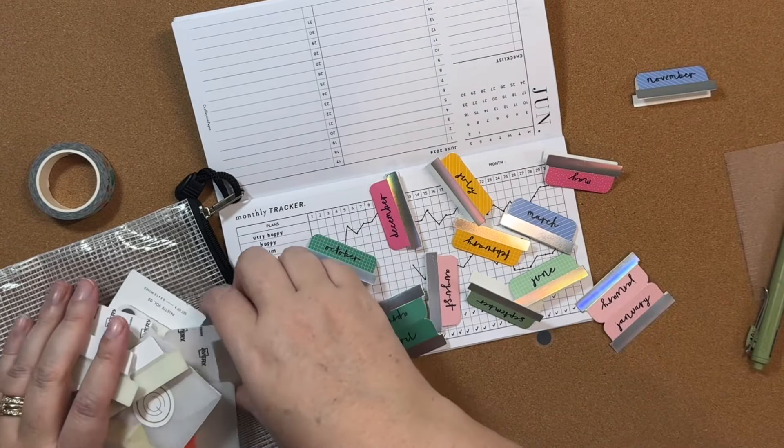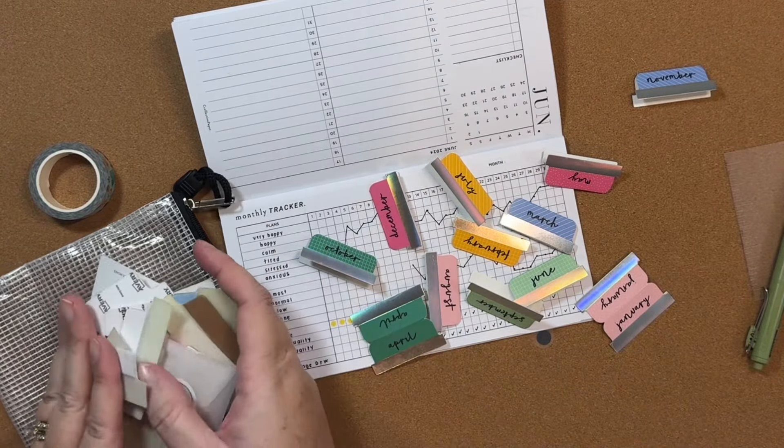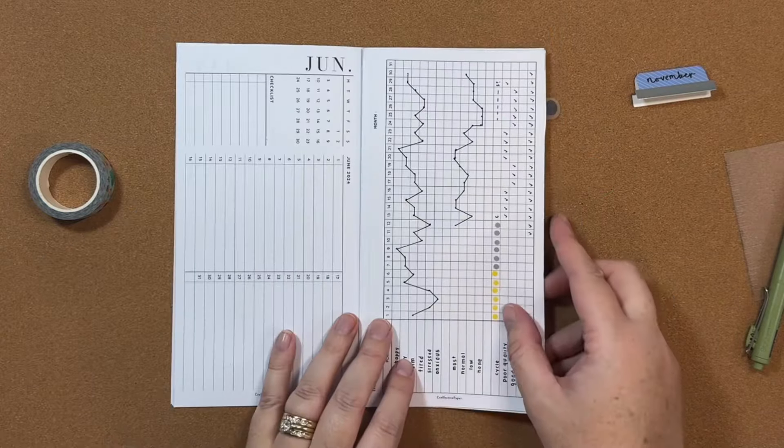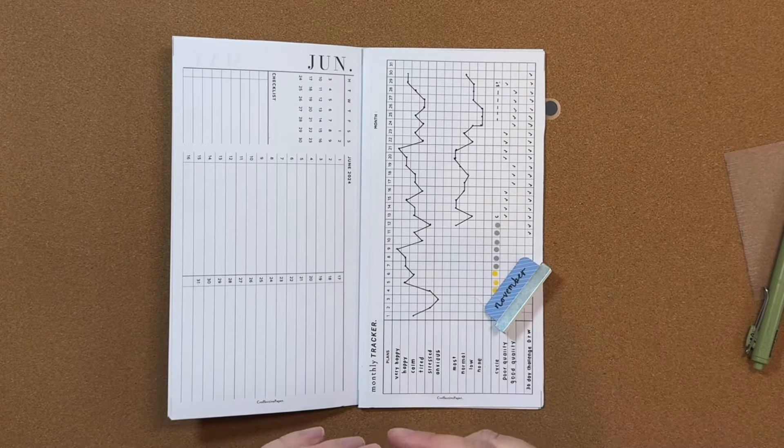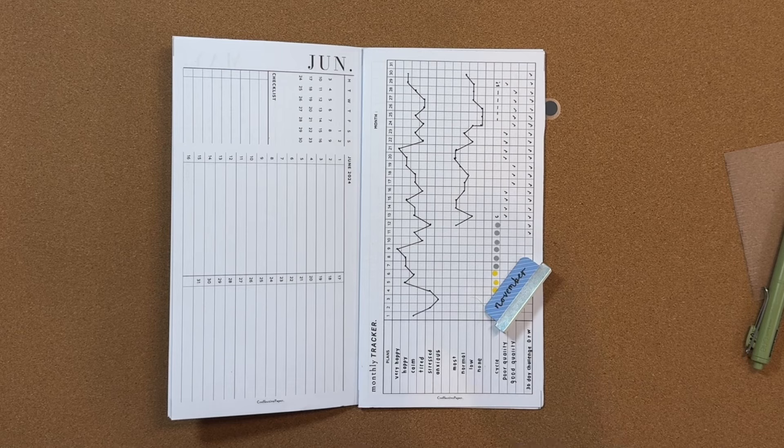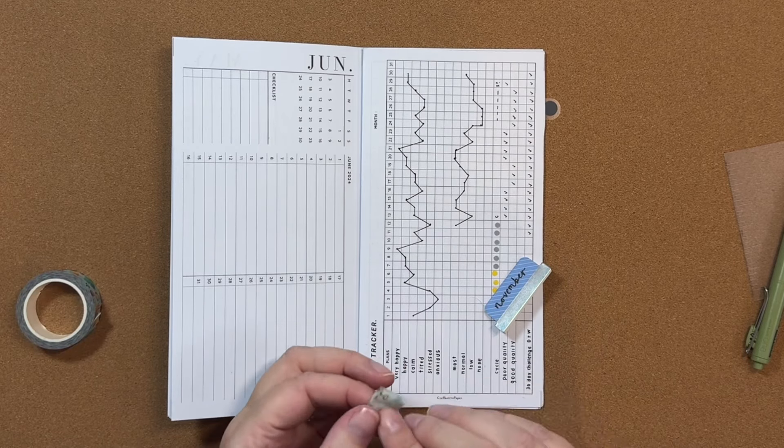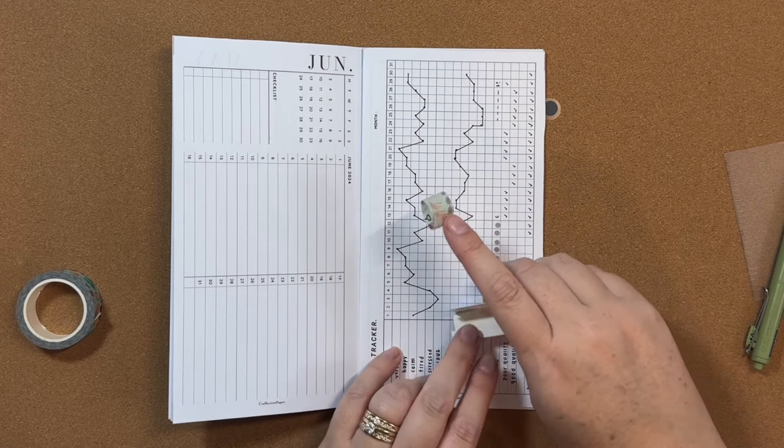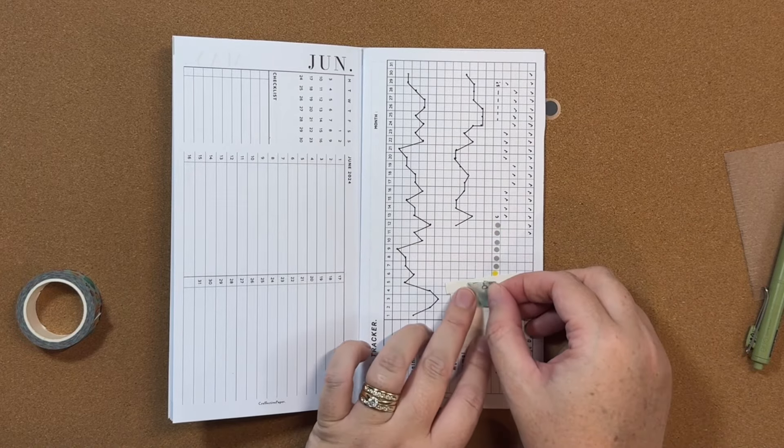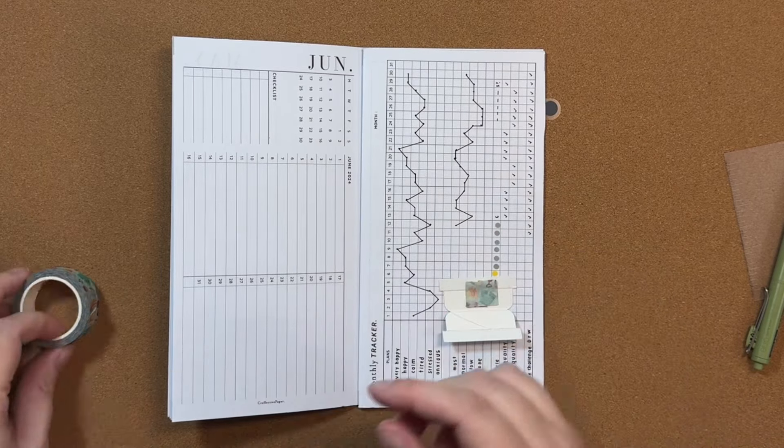Here it is right in front of my face. All right, let me get these put up real quick and we'll get this put on with some washi. Just fold it over, make it sort of like double-sided tape, and put one on each side.